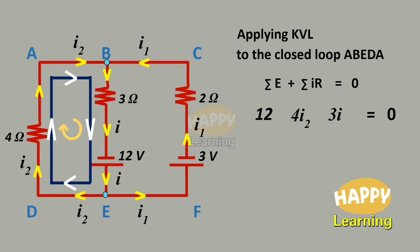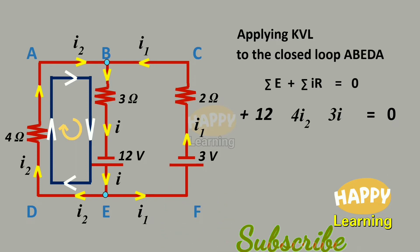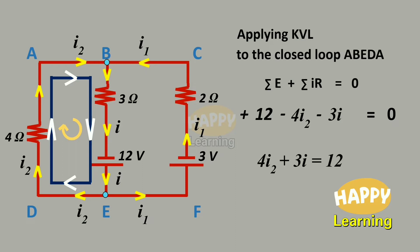With respect to the clockwise reference direction, at the 12-volt battery we are moving from negative to positive terminal, therefore applying sign convention it should be positive, so I am writing plus 12. At the 4-ohm resistor, we are moving along the current direction, therefore it should be negative, so minus 4I2. At the 3-ohm resistor, the reference and current direction are the same, so it should be negative — minus 3I. The final equation is 4I2 plus 3I equals 12. Let it be equation number 2.